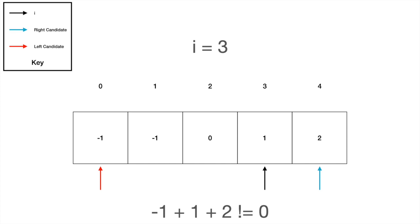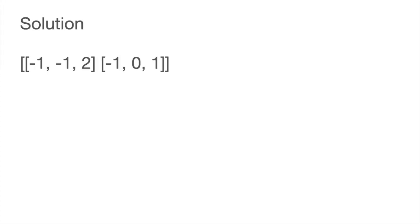And in this case, we no longer increment I, since we've completed the range of I, which we seek to traverse, meaning this is the end of our algorithm. This gives us our solution, which is two sets of elements.